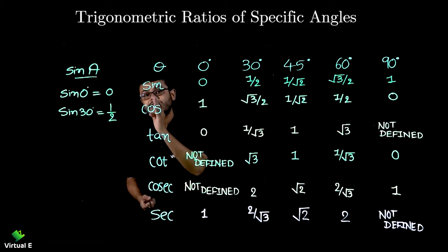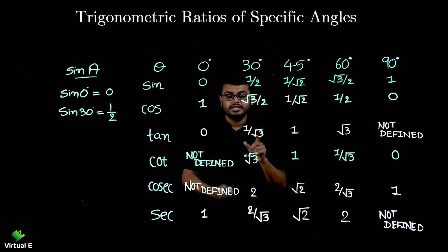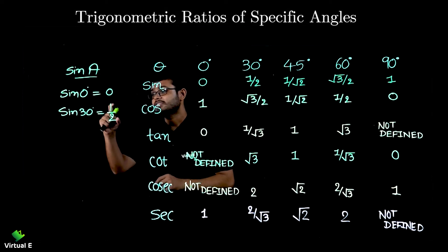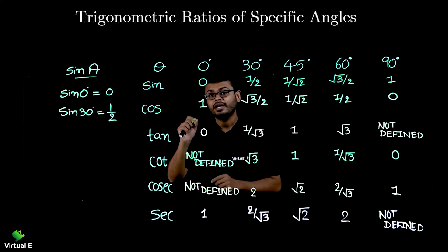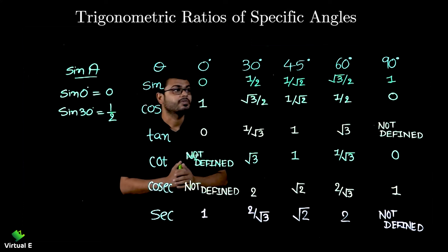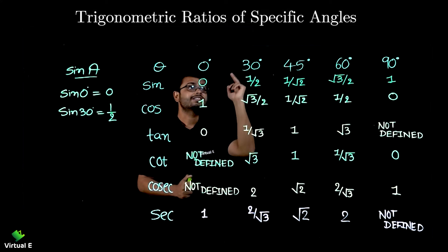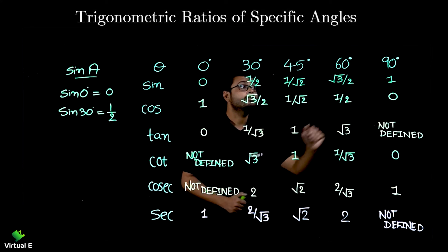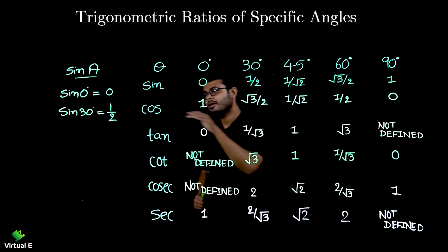That is fixed, it's not going to change for any length. We discussed this property in the first video. This ratio is common irrespective of the size of the triangle. It only depends on the angle. So values for sine: sine 0 is 0, sine 30 is 1 by 2, sine 45 is 1 by root 2, sine 60 is root 3 by 2, and sine 90 is 1.